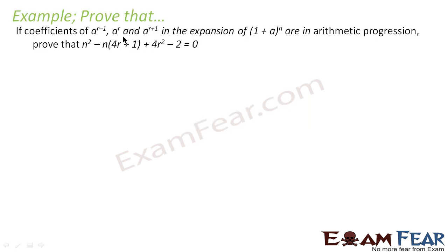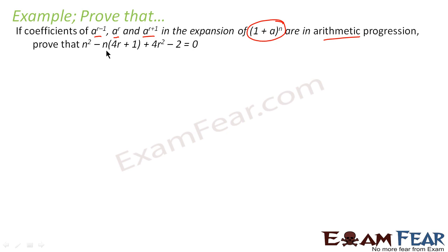In this example, it is given that the coefficients of a to the power r minus 1, a to the power r, and a to the power r plus 1 in the expansion are in AP. So we have to prove that n squared minus n times (4r plus 1) plus 4r squared minus 2 is equal to 0.